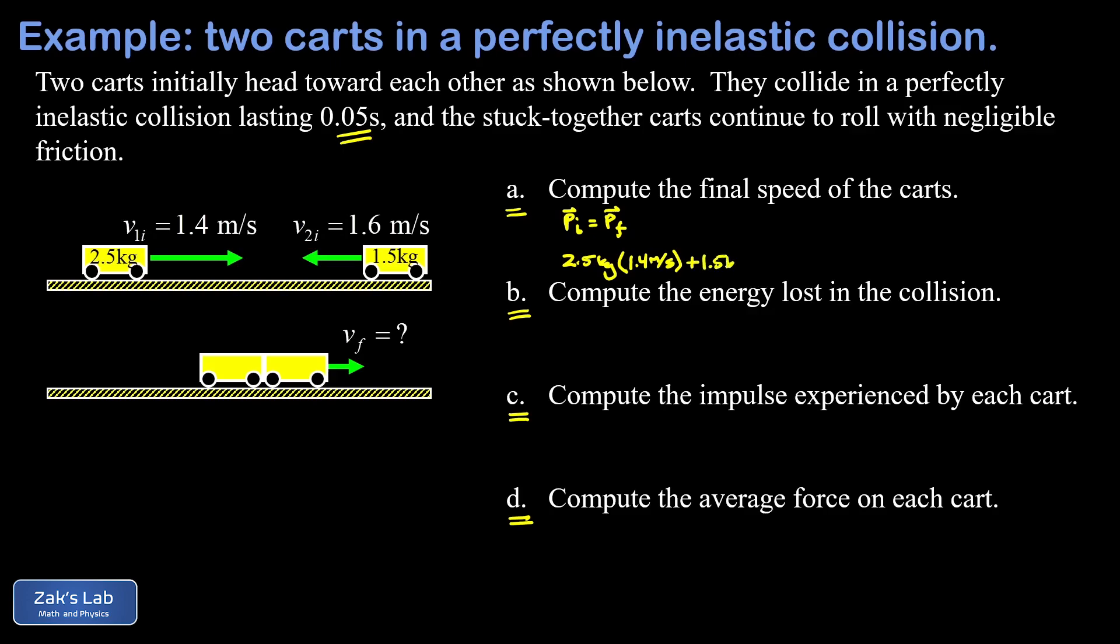The momentum of the 1.5 kilogram cart I can write as plus 1.5 kilograms times its negative velocity of 1.6 meters per second, where that minus sign indicates leftward motion. In a perfectly inelastic collision, the two carts stick together and travel with some final velocity. The total mass when I put the carts together is 4 kilograms, and that final velocity is our unknown. We simplify everything on the left side of the equation - the units are kilogram meters per second. Then we divide by the four kilograms, giving units of meters per second. Into three significant digits, this gives us a final velocity of 0.275 meters per second.